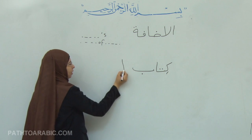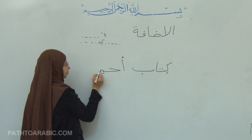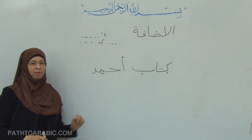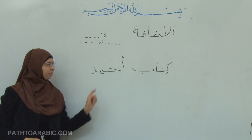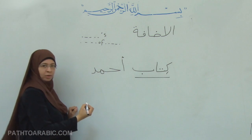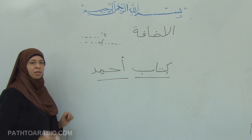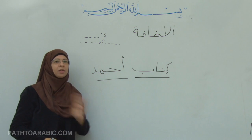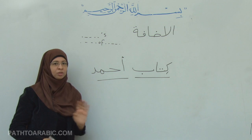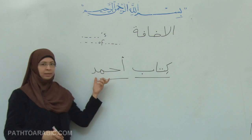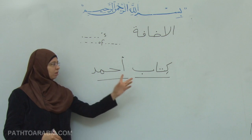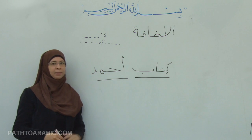كتاب أحمد — idhafa — Ahmed's book. This is the meaning of idhafa: Ahmed's book, or the book of Ahmed. The first noun in idhafa, كتاب, is a noun, and أحمد is another noun — it's a name. The first noun in idhafa is never definite, never with alif lam, never with a possessive ending like كتابي or كتابك — just a bare noun, indefinite. The second noun can be definite, it can be a name, it can be any noun.